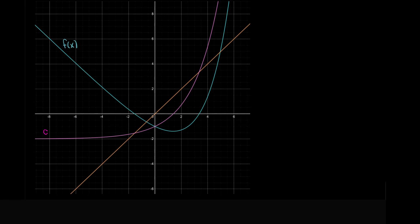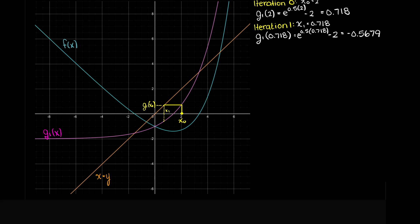To begin solving for our root, we begin by plugging our initial guess into our function. This gives an output of 0.718. Now all we need to do is continually plug our previous output as our next iteration's input. Therefore, for iteration 1 we get minus 0.5679.